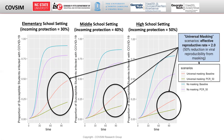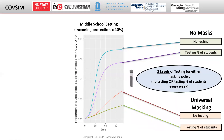The universal masking scenarios reflect an effective reproductive rate of 2, representing a 50% reduction in transmission from masking. For both masking policies, two testing options are possible: either no testing, or randomly testing half of students every week.